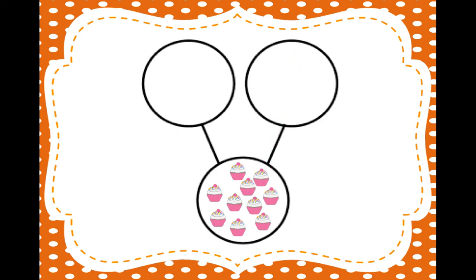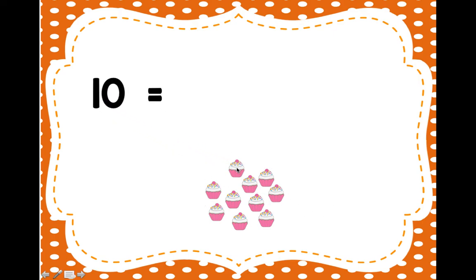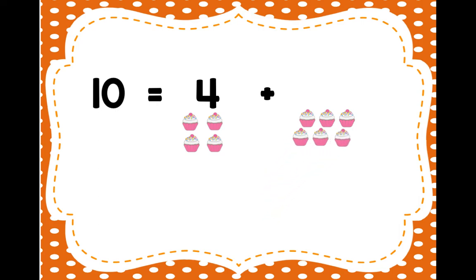How many cupcakes do we have all together? Let's count them. One, two, three, four, five, six, seven, eight, nine, ten cupcakes. So we put them all back at the top again. We had four cupcakes and six cupcakes, and together that makes ten. Good. When I put it in the equation, here's my ten cupcakes all together. Ten equals one, two, three, four, plus one, two, three, four, five, six. So ten is equal to four plus six.